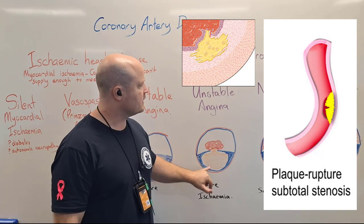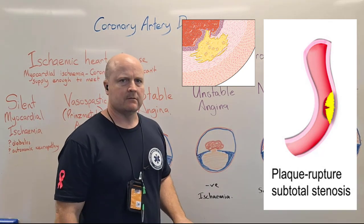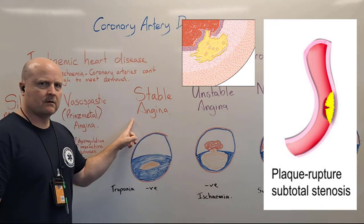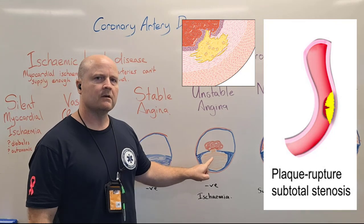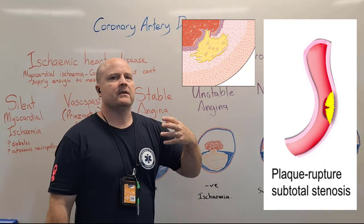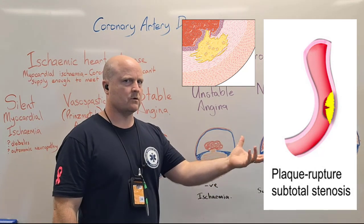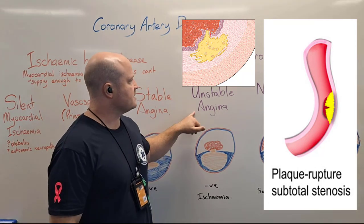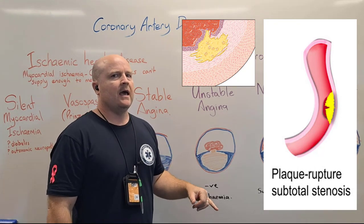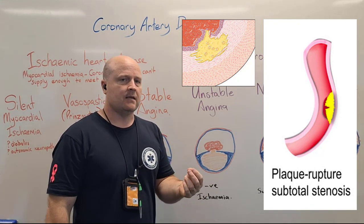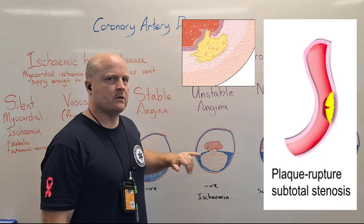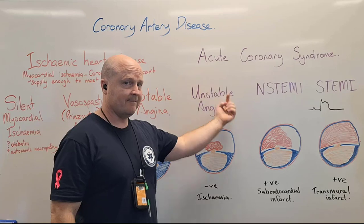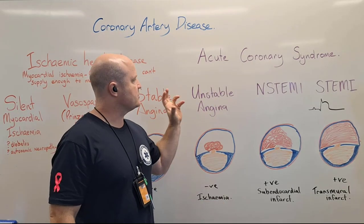That exposed necrotic core causes a clot to form — this is unstable angina. The person may have had angina for years, but once the fibrous cap ruptures and a clot forms, the normal stable pattern of pain with exertion relieved by rest or GTN no longer holds. Unstable angina won't be relieved with rest, and vasodilating medicines like GTN won't be as effective. The pain levels will also be greater. Importantly, with unstable angina we're not causing infarction yet — there's ischemia but no tissue damage.